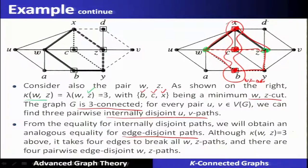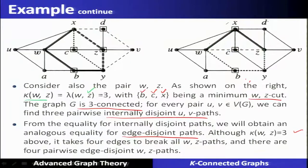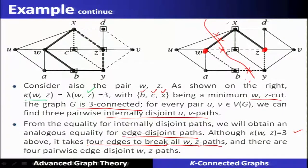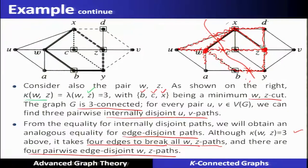Let us see those four edge-disjoint w-z paths. If we cut edges 1, 2, 3, 4 then w and z will be disconnected — the size is 4. Hence it takes four edges to break all w-z paths, and there are four pairwise edge-disjoint w-z paths.